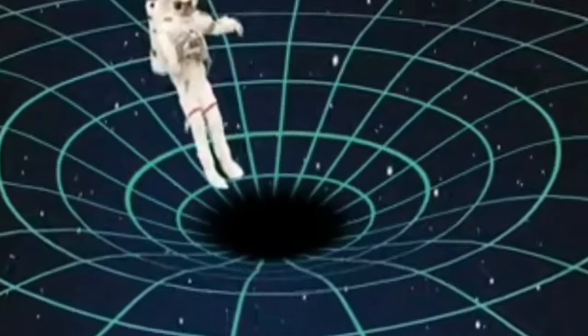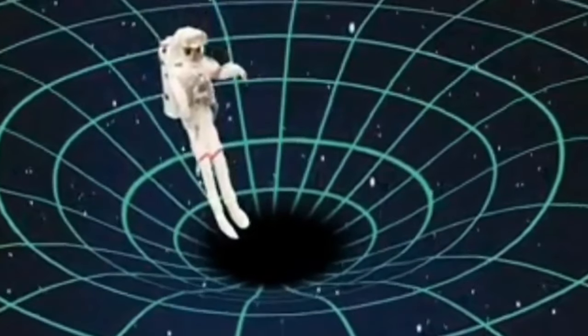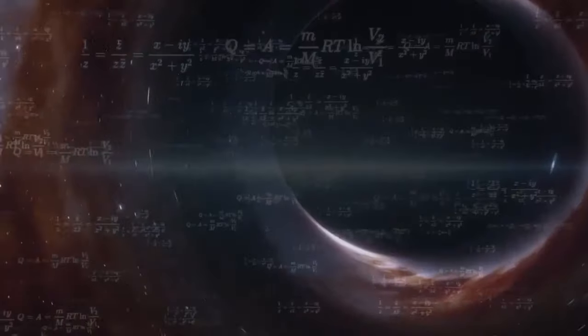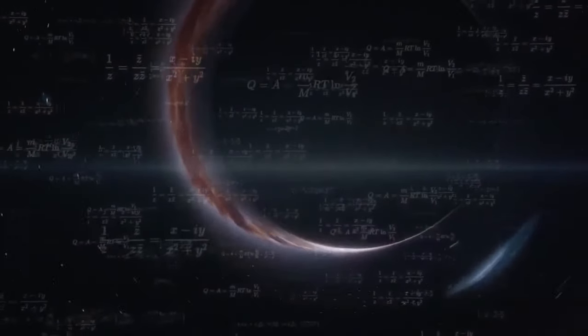Contrary to popular belief, black holes are not cosmic vacuum cleaners that indiscriminately suck in everything around them. Their gravitational pull primarily affects objects very close to them. In most cases, stars and planets in a galaxy remain in stable orbits, largely unaffected by the presence of black holes.